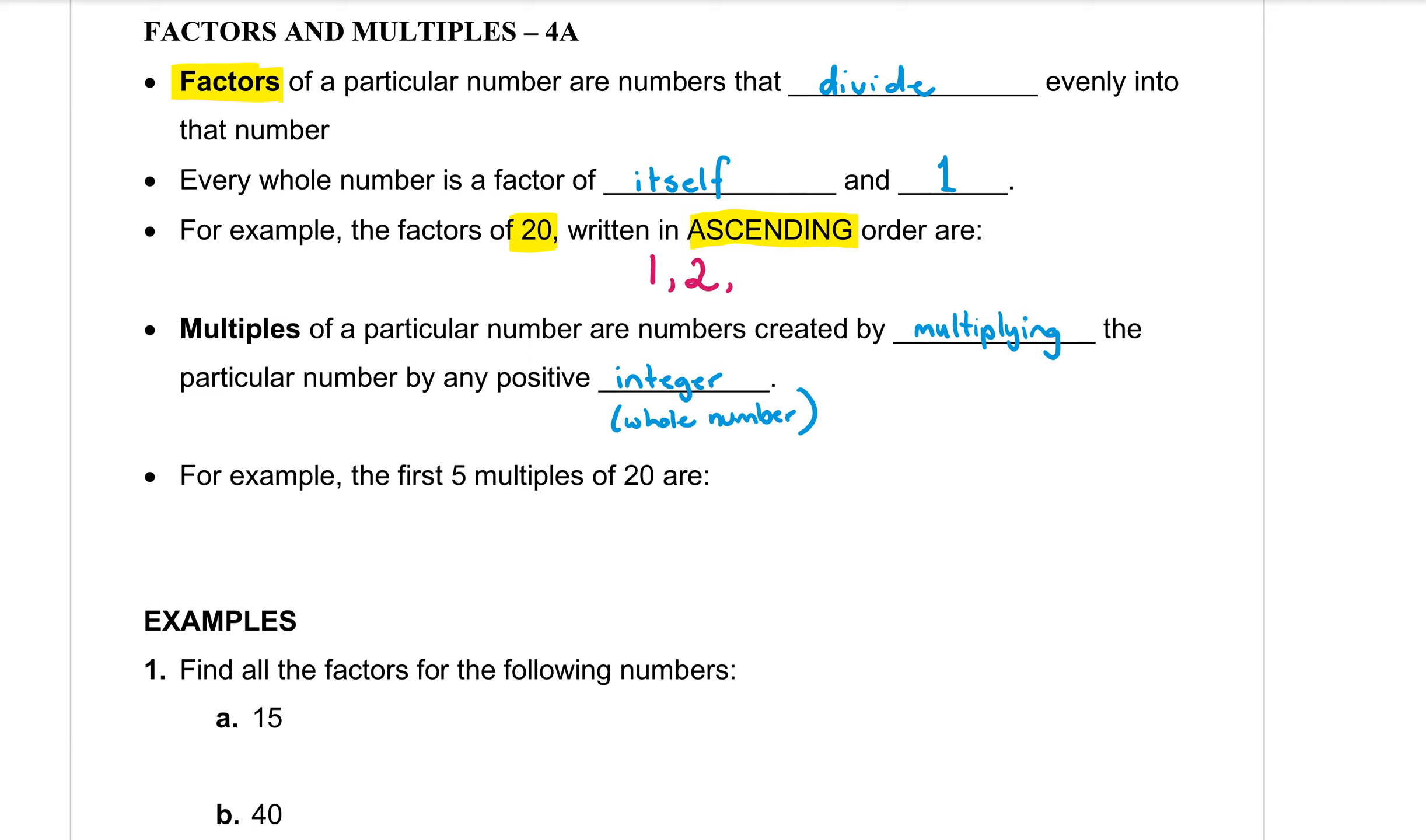What about 3? Does 20 divide by 3? No. I would get a remainder in there so that doesn't work. 20 divided by 4? Yes it does. So that's a factor. Does 20 divide by 5? Yes that's a factor. Does 20 divide by 6? No.